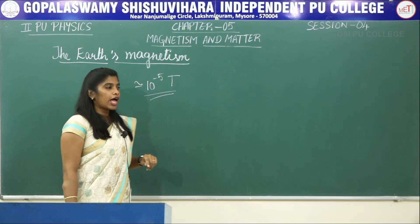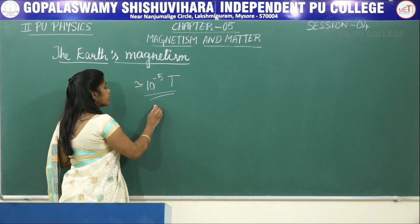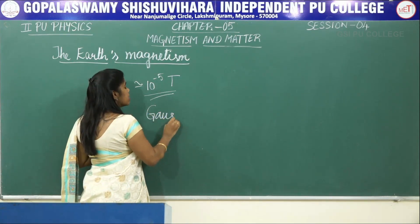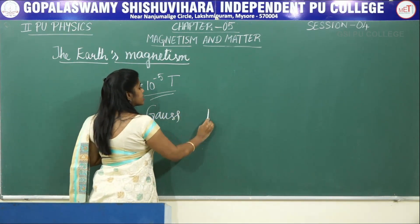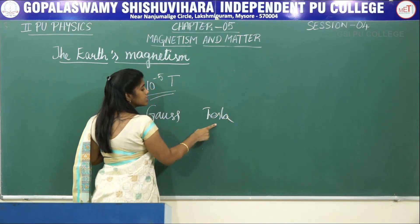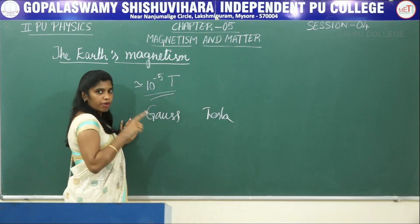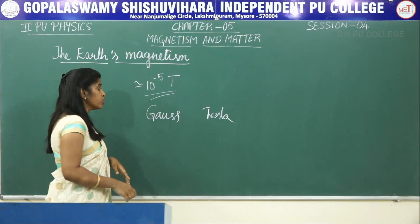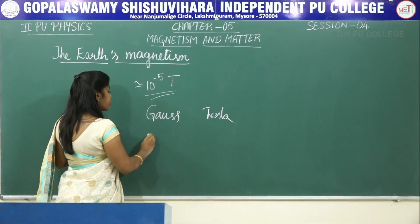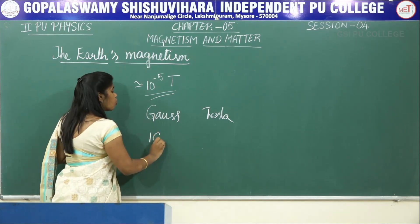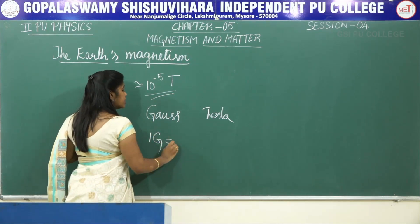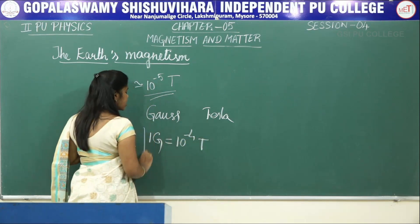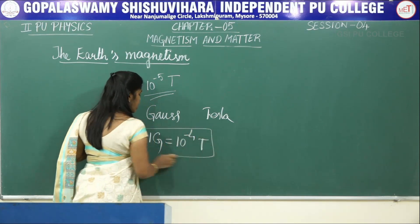One more thing I have to mention here — the relation between Gauss and Tesla. Tesla is the SI unit of magnetic field strength and Gauss is the CGS unit. The relation between them is: 1 Gauss is equal to 10⁻⁴ Tesla. Remember this value.